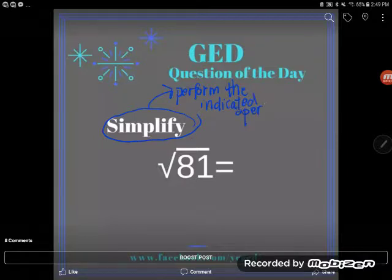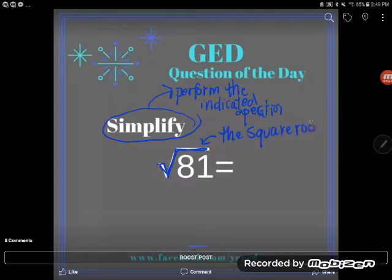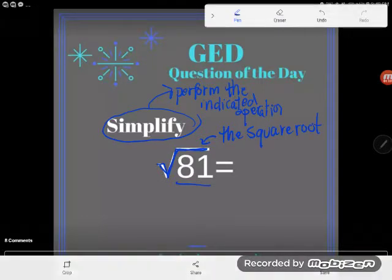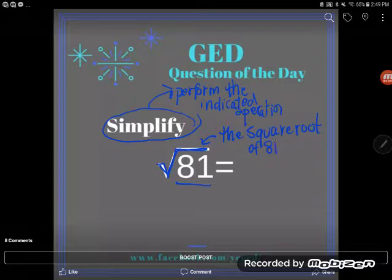Well, what operation do I see indicated here? That's your first clue. What is this symbol? This means the square root, and we just say 'the square root of' because we're only talking about one number when we do square roots. So the square root of 81—that's what this problem is telling us to do symbolically.